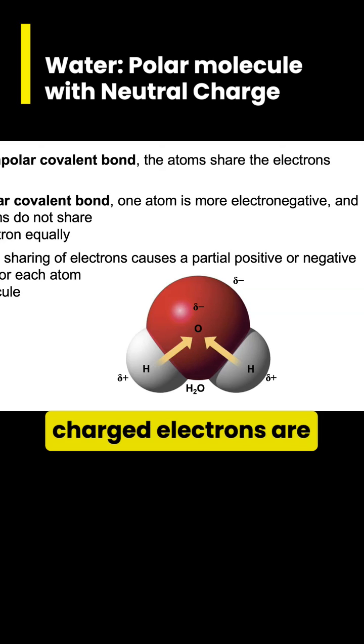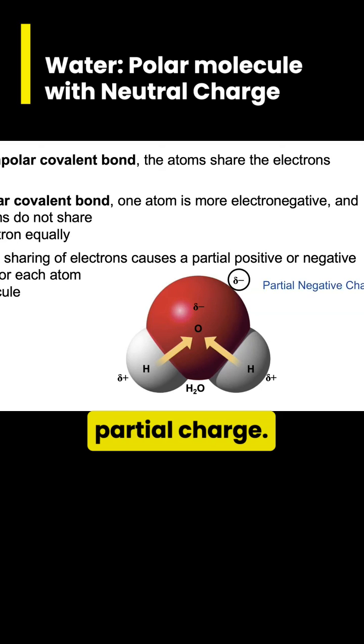Because the negatively charged electrons are around oxygen more, this gives oxygen a slight negative charge property which we call the partial charge.